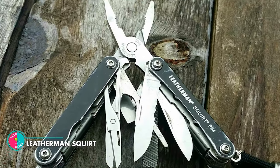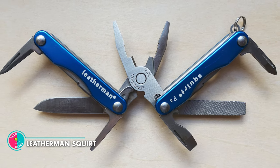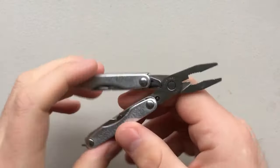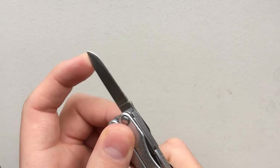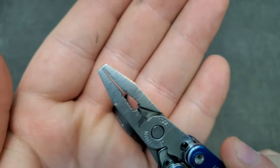Leatherman Squirt. The Spring-Action Squirt P4 can be fastened to a keychain or bag. It supports your mobile lifestyle with three screwdrivers, wire cutters, a knife blade, and more. It's tiny, but tough, and 100% Leatherman.